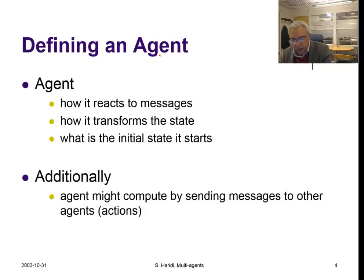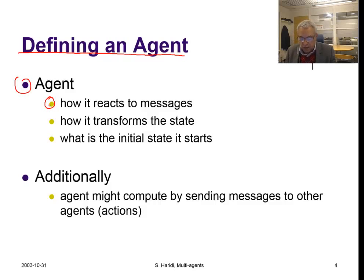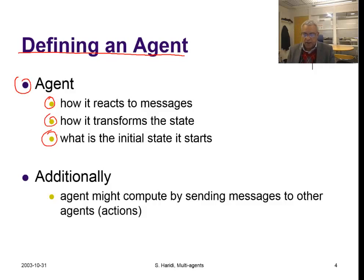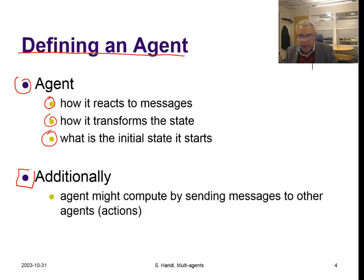Now we would like to cast this in our model. What we want is to show how an agent reacts to messages, how it transforms the state, and what the initial state of the agent is when it starts. Agents, while receiving a message and transforming the state, might also do some additional computations — we call them actions, which include, for example, sending a message to other agents.